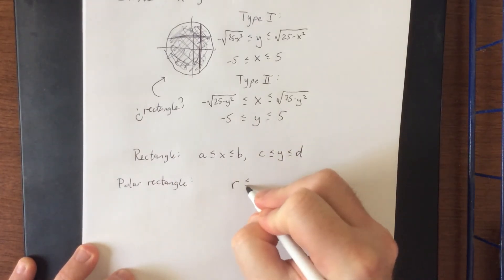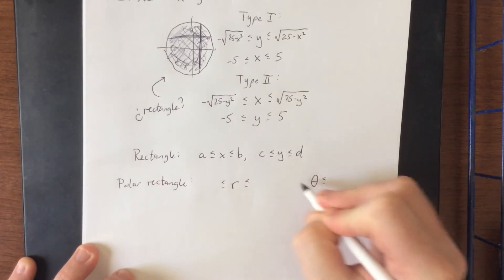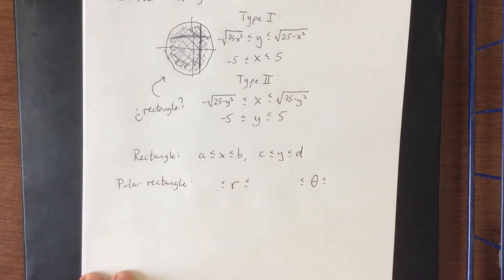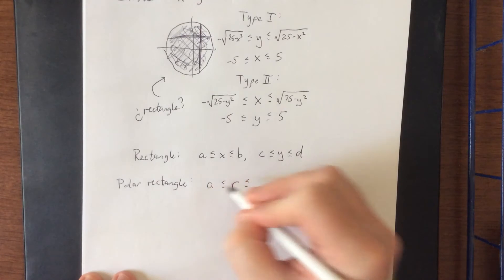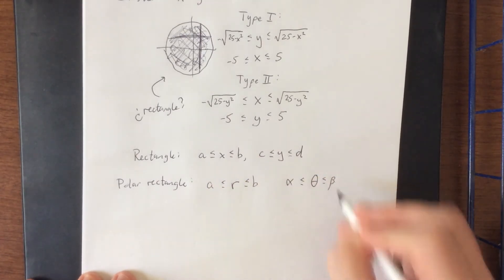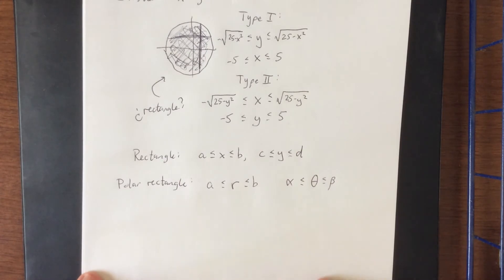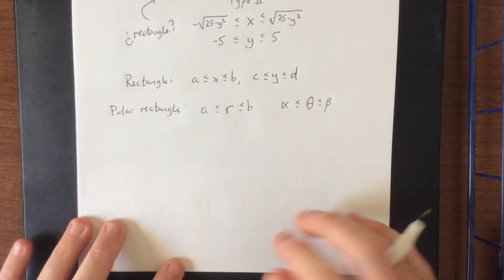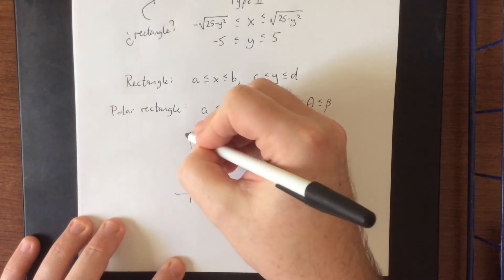In polar coordinates, we're not dealing with x's and y's, we're dealing with r's and thetas. So let's say that r is between something like a and b, and then theta is between something like alpha and beta. So what a polar rectangle would look like in the x-y plane would be the following.